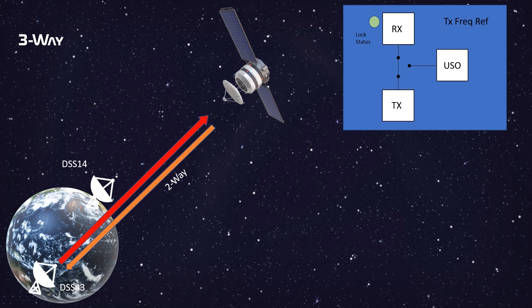Three-way is simply a second station receiving the coherent signal from another uplinking station. When referring to this mode it is described as three-way with the uplinking station. For instance, DSS-14 could be three-way with 43, if 43 was the uplinking station.